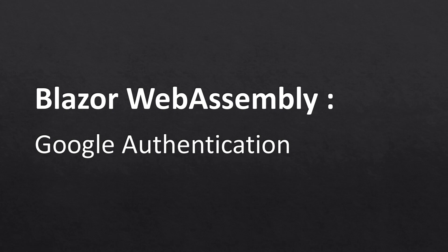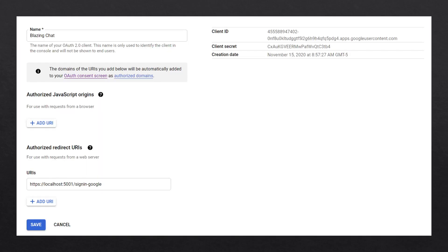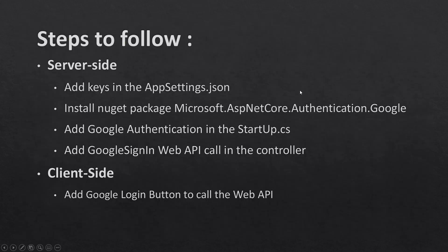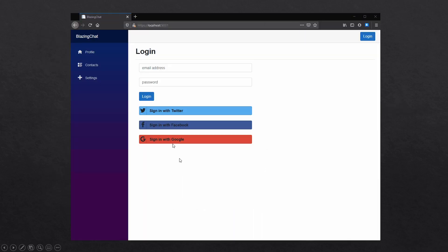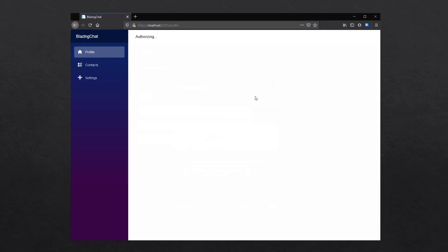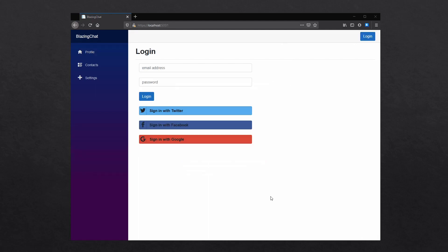In this episode I'm going to talk about how you can integrate Google authentication in Blazor WebAssembly applications. First I'm going to create an app on Google's developer console which will give me the client ID and client secret, and I'm going to use that in my app settings on the server side. We'll follow the same steps we followed for Twitter and Facebook authentication: add a Google authentication package, add Google authentication support in our Startup class, add a Web API in the controller for the user to log in with Google, and add a button on the client side to call that Web API.